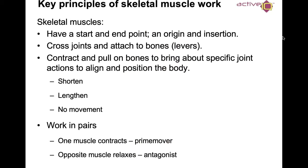The key principles of skeletal muscle: skeletal muscles have a start and end point, which we know as an origin and insertion. They cross joints and attach bones to levers, contracting to bring about specific joint actions to align and position the body — they shorten, lengthen, or may require no movement at all. Skeletal muscles work in pairs: one muscle contracts as the prime mover, and the opposing muscle relaxes as the antagonist.